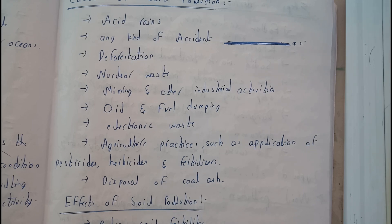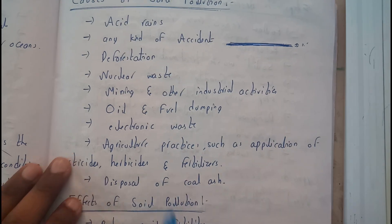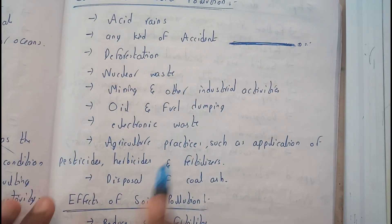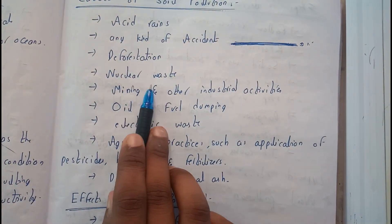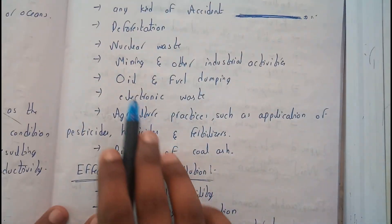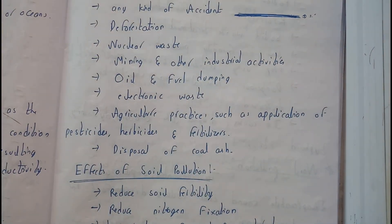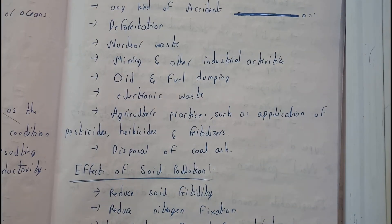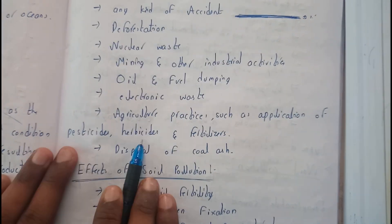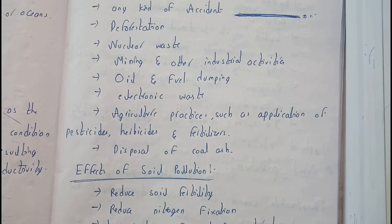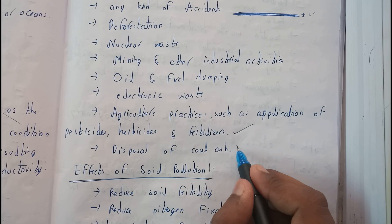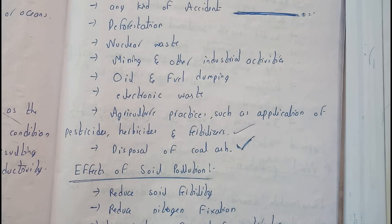Other causes of soil pollution include: deforestation, throwing of nuclear waste, mining and industrial activities, oil and fuel dumping, electronic waste like batteries, agricultural practices such as application of pesticides, herbicides and fertilizers, and disposal of coal ash.